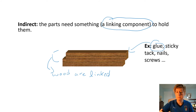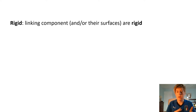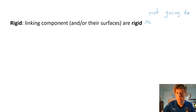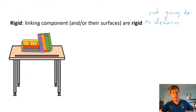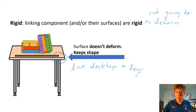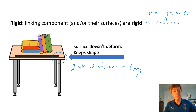In our next category, rigid versus flexible: if something is rigid, the linking component and/or their surfaces are rigid, meaning they are not going to deform. Looking at an example, the link between the desktop and the legs of a desk would be a rigid link, because the surface of both the desktop and the legs don't deform — they keep their shape.